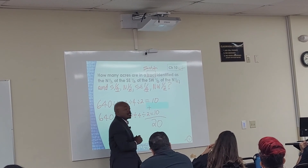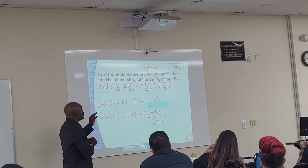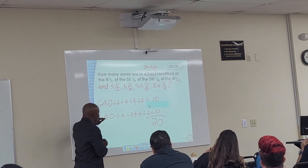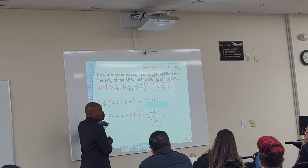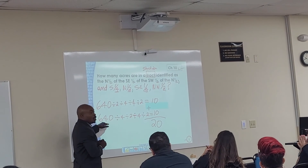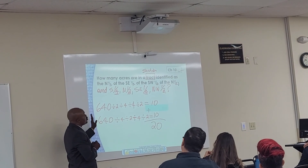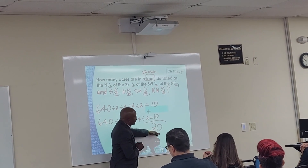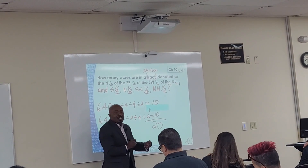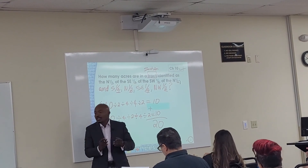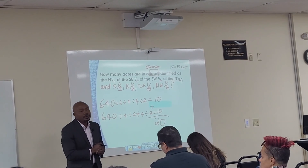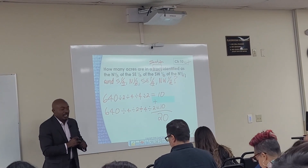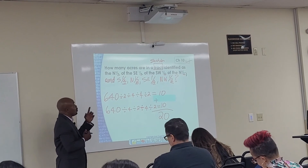So if you see the word 'and,' you simply start over with a new section, go through the same process, and then add the final numbers together. That is what to do whenever you see the word 'and.'